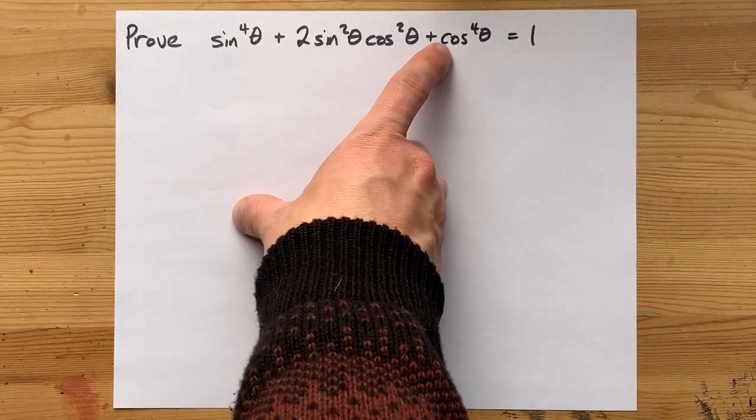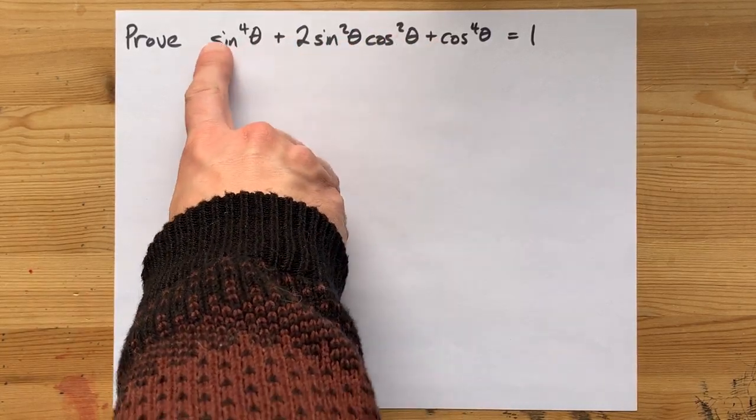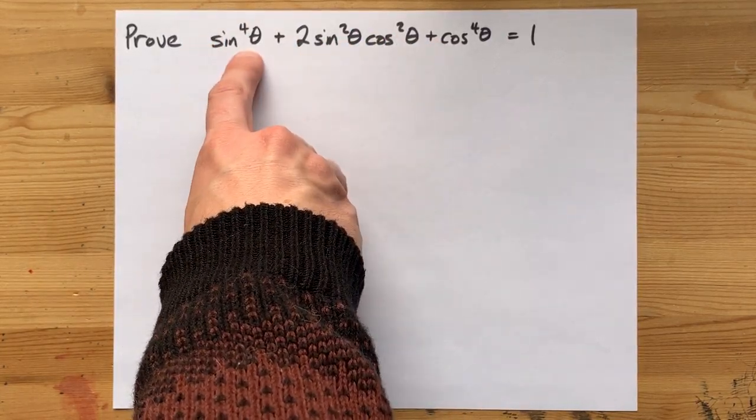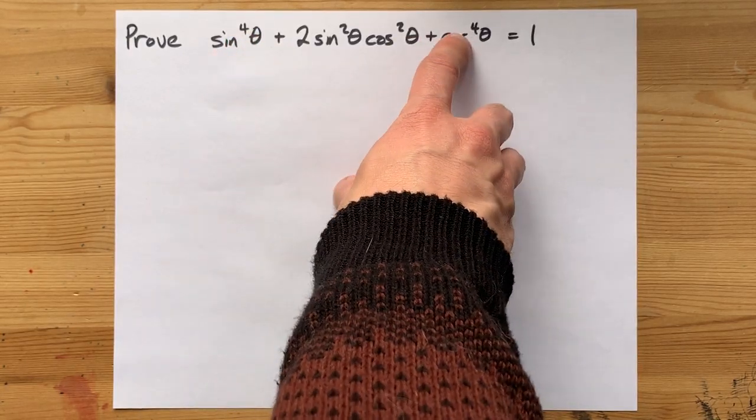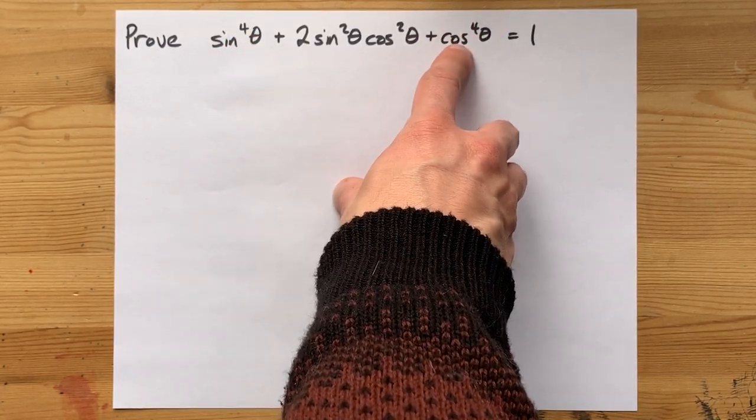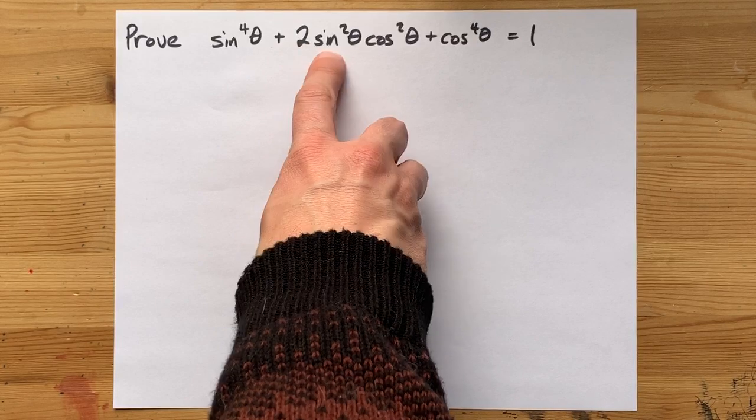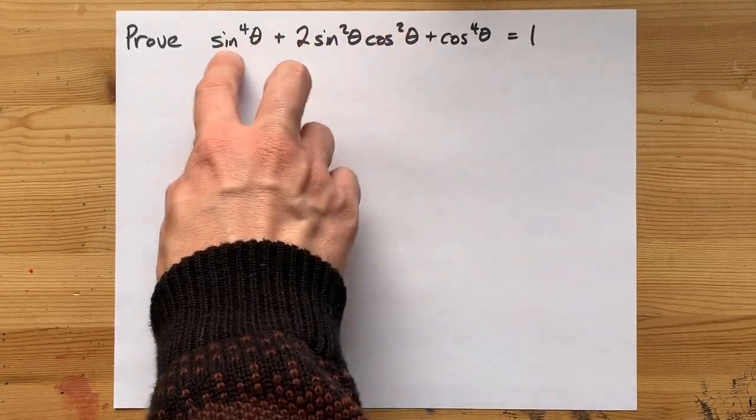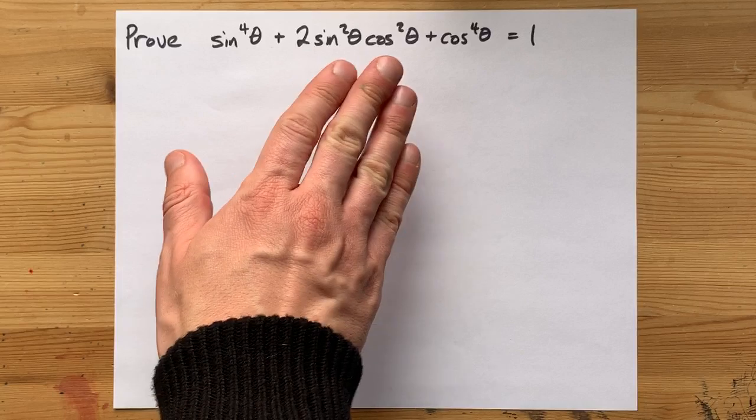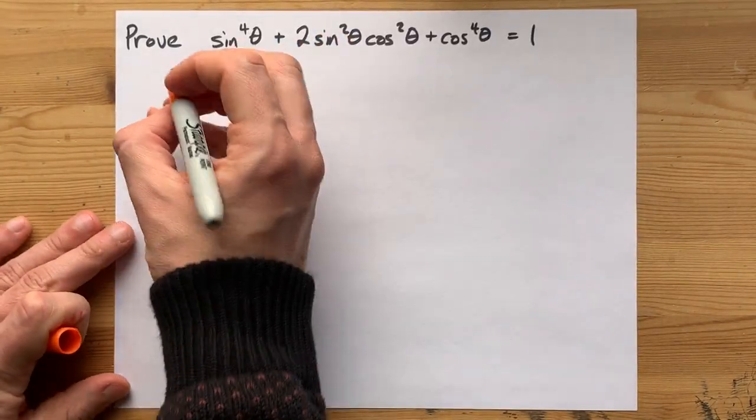It is a perfect square trinomial because the square root of this is sin²θ, the square root of this is cos²θ, and 2 times sin²θcos²θ is that middle term. It ends up factoring perfectly into a perfect square trinomial.